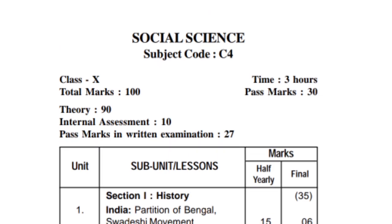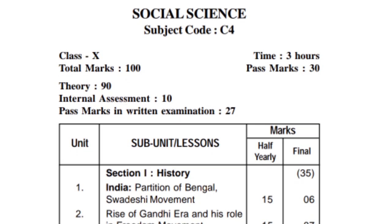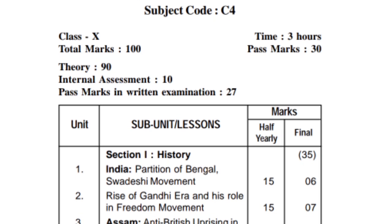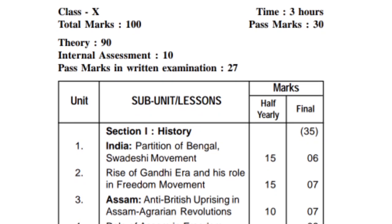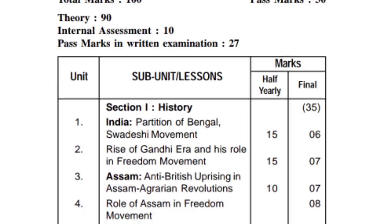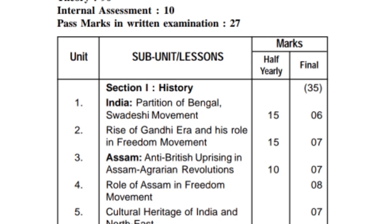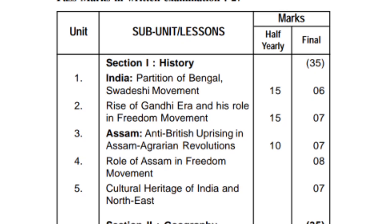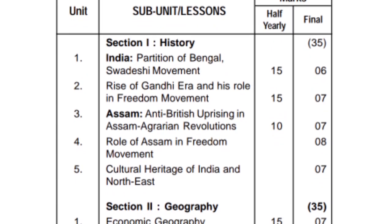For Social Science — History: Partition of Bengal and Swadeshi movement — 5 marks. Rise of the Gandhi era and his role in the freedom movement — 15 marks. Anti-British uprisings, aggregate revolutions. Next is the role of Assam in the freedom movement.